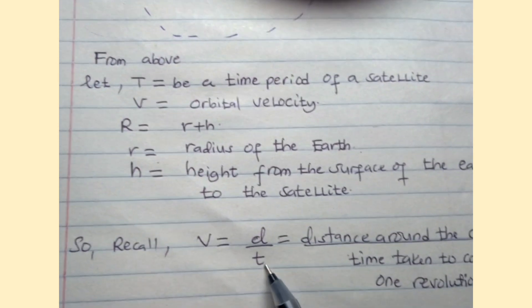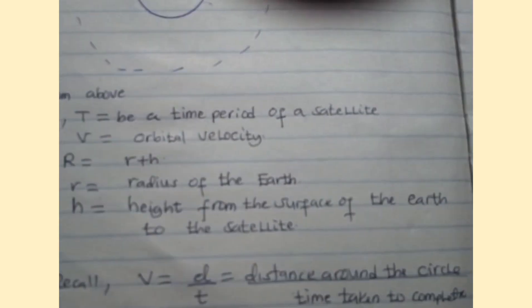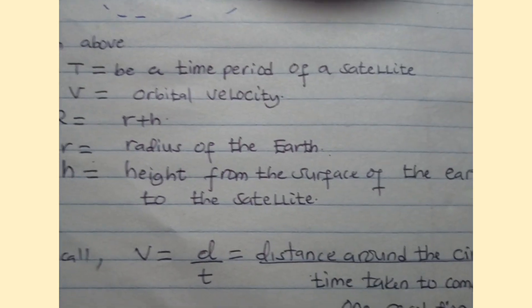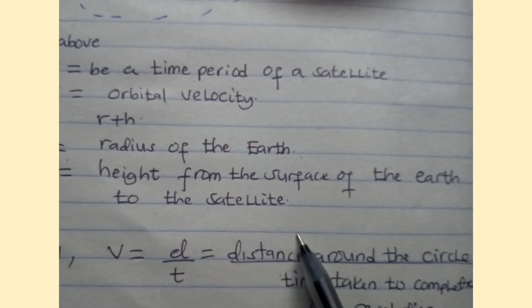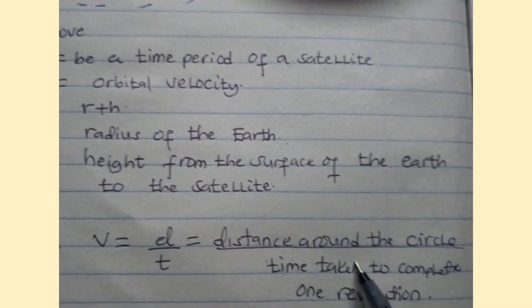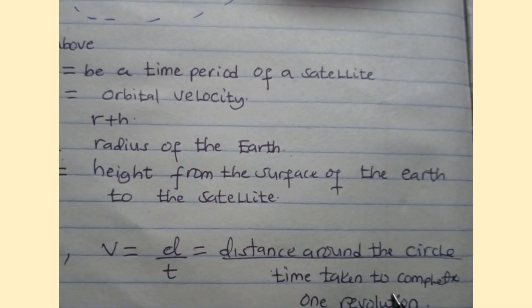In our case, this distance is the distance around the circle and this time is the time taken to complete one revolution.